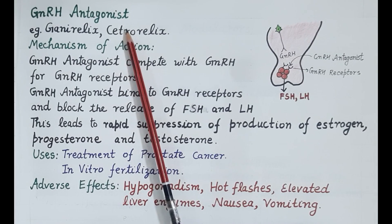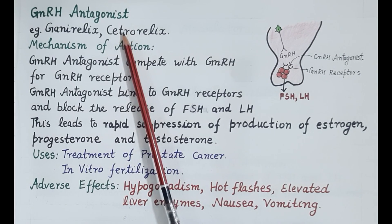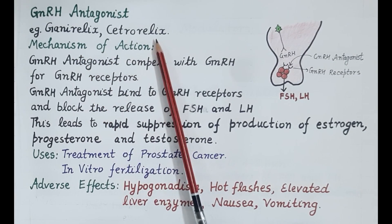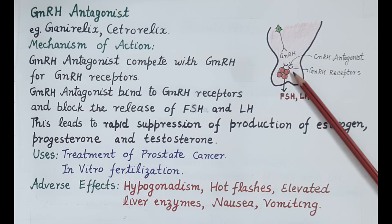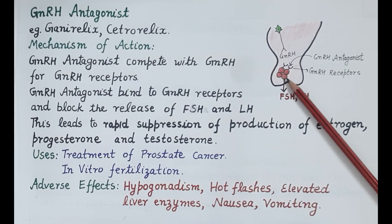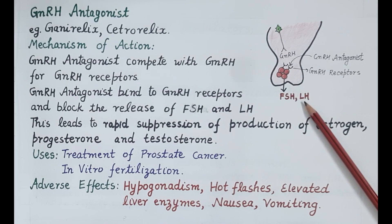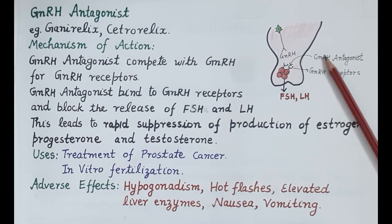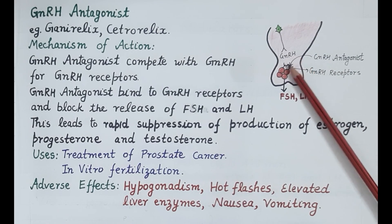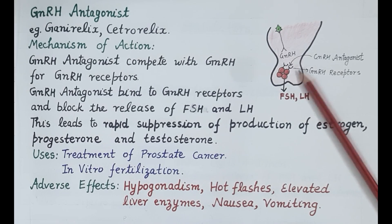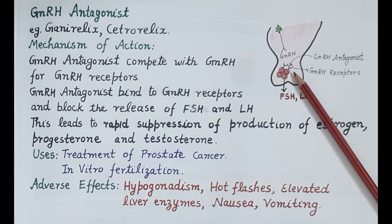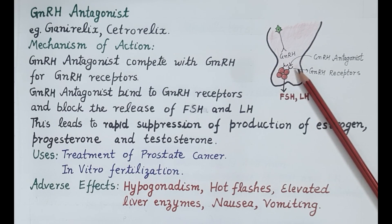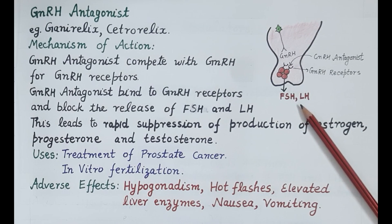GNRH antagonists include ganirelix and cetrorelix. GNRH is released by the hypothalamus and binds to GNRH receptors, stimulating gonadotropes and causing release of FSH and LH. GNRH antagonists compete with natural GNRH for these GNRH receptors. These drugs bind to the receptors and block them, thereby blocking the release of FSH and LH from the anterior pituitary.